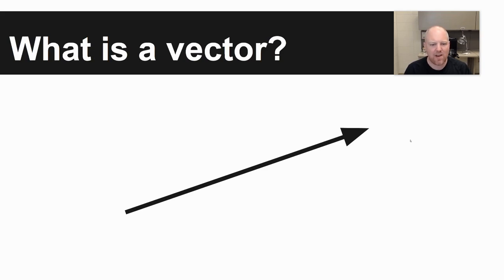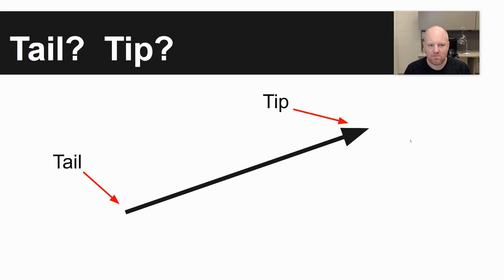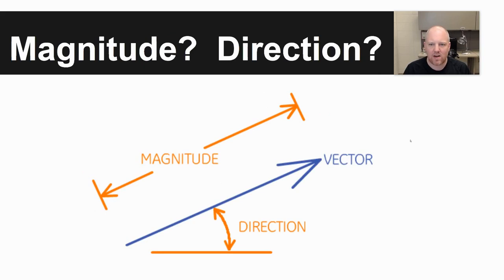First off, what is a vector? A vector is often just drawn as an arrow, and a vector has two different parts of it that I'll refer to. A tail is the back end of an arrow and the tip is the front end of an arrow. There are two important quantities that a vector has. The first is magnitude, the size or the length of a given vector, and the second thing is a direction, so which way is it pointed?